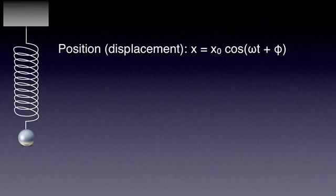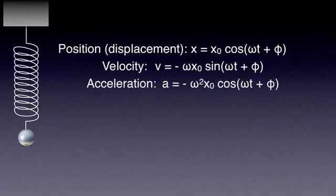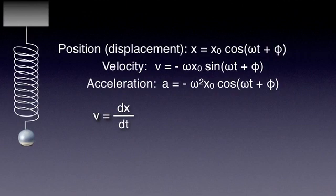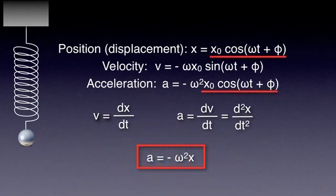Now that we have the equation of motion x equals x₀ cos(ω·t + φ), we can find out how the velocity and acceleration of an oscillator change in time. The expressions are: v equals minus omega·x₀ sine(ω·t + φ), and a equals minus omega-squared·x₀ cosine(ω·t + φ). For those familiar with differential calculus, you can derive them by differentiating x to get velocity, and then differentiating velocity to get acceleration.